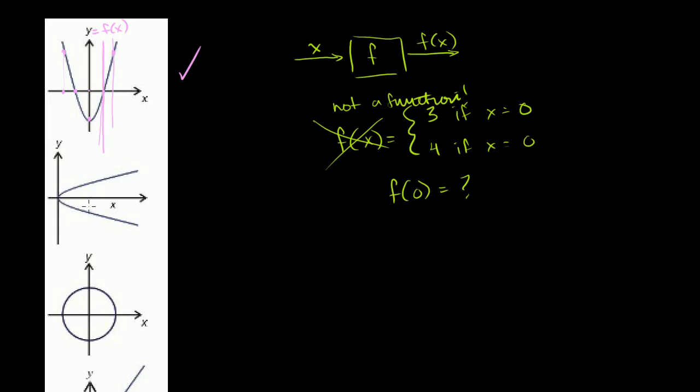So this is a valid function. Any time you draw a vertical line, it will only intersect the graph once. So this is a valid function. Now what about this one right here? I could draw a vertical line at that point right there. For that x, this relation seems to have two possible f of x's. f of x could be that value, or f of x could be that value. We're intersecting the graph twice.